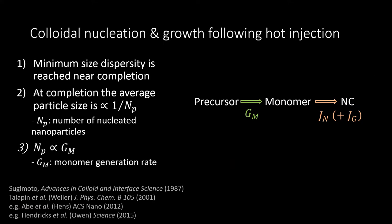As demonstrated by the Hens group, the minimum size dispersity is attained near completion. At this point, the average particle size is inversely proportional to the number of nucleated particles, a quantity which is directly proportional to the monomer generation rate as per Sugimoto theory and elegantly demonstrated by the Owen group. Thus, tuning Gm, the monomer generation rate, allows for the desired size to be obtained at reaction completion, yielding the desired size distribution. The classical picture involves monomers forming at a rate Gm from precursor species, which are then consumed by either nucleation or growth.